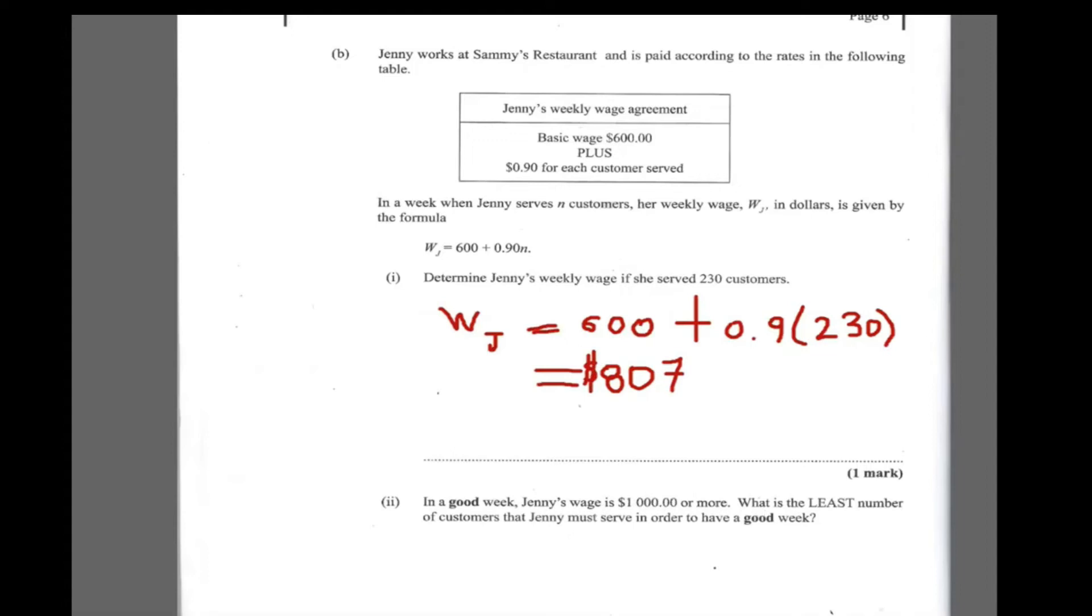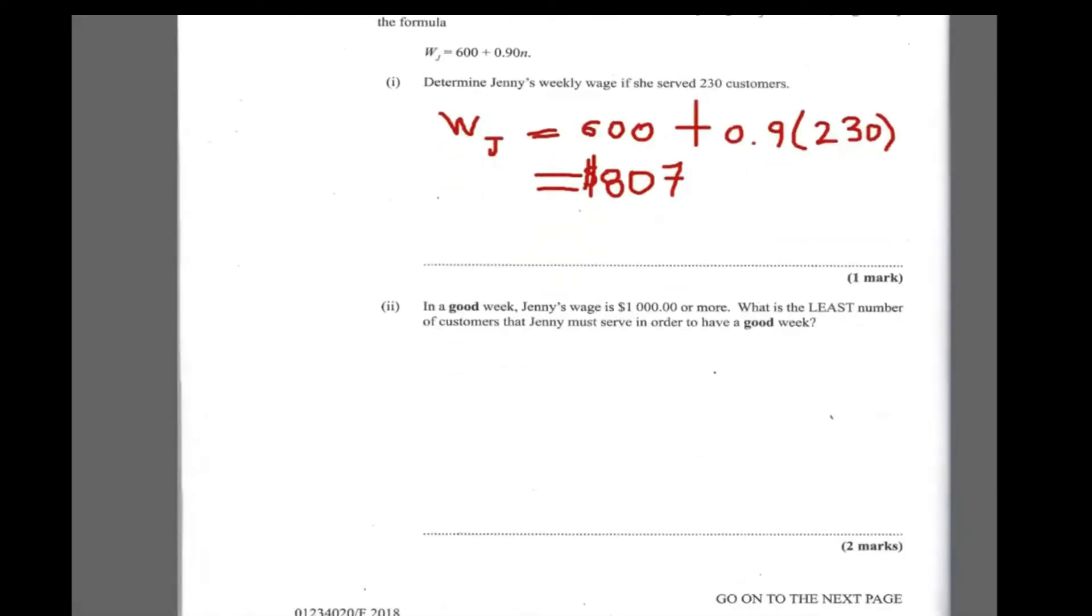It says in a good week, Jenny's wage is $1,000 or more. Wow, to make $1,000, that's a lot of money in one week. So let's see how Jenny do it. It says what is the least number of customers that Jenny must serve in order to have a good week? In order to have a good week, her wage must be greater than or equal to $1,000. So the wage formula, as we know, is $600 plus 0.9N, and in order for her to have a great week, this wage formula must be greater than or equal to $1,000. That's the only way Jenny will have a great week. We'll see if her wage is greater than $1,000.